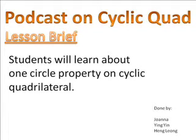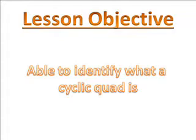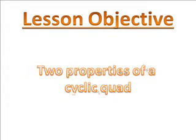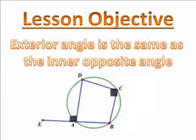Hi class, we have discussed the cyclic quad in the previous lesson. You should be able to identify what a cyclic quad is and also two properties of the cyclic quad. And they are, the first one, opposite angles add up to 180 degrees, and the second one, exterior angle is the same as the inner opposite angle.